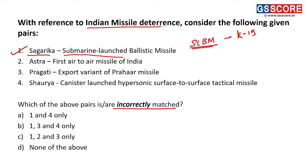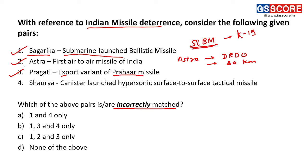Second pair is Astra, matched with India's first air-to-air missile. This is also correctly matched because Astra is developed by DRDO — it is DRDO's first air-to-air supersonic missile with a range of 80 kilometers and is the smallest missile designed by DRDO. Third pair is Pragati, described as the export variant of the Prahar missile. This is also correctly matched: Prahar is a surface-to-surface ballistic missile with a range of 150 kilometers, and its export variant is named Pragati.